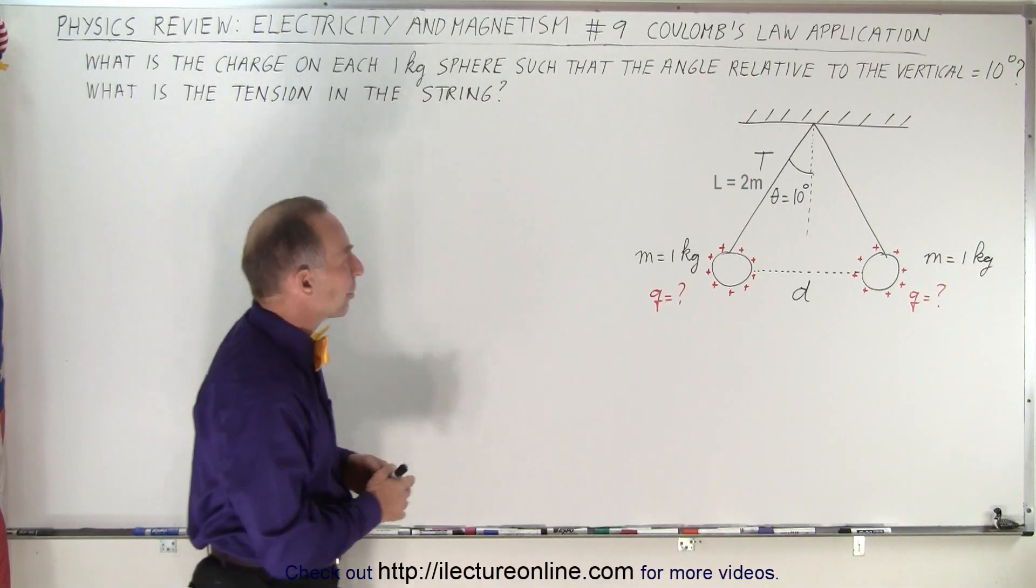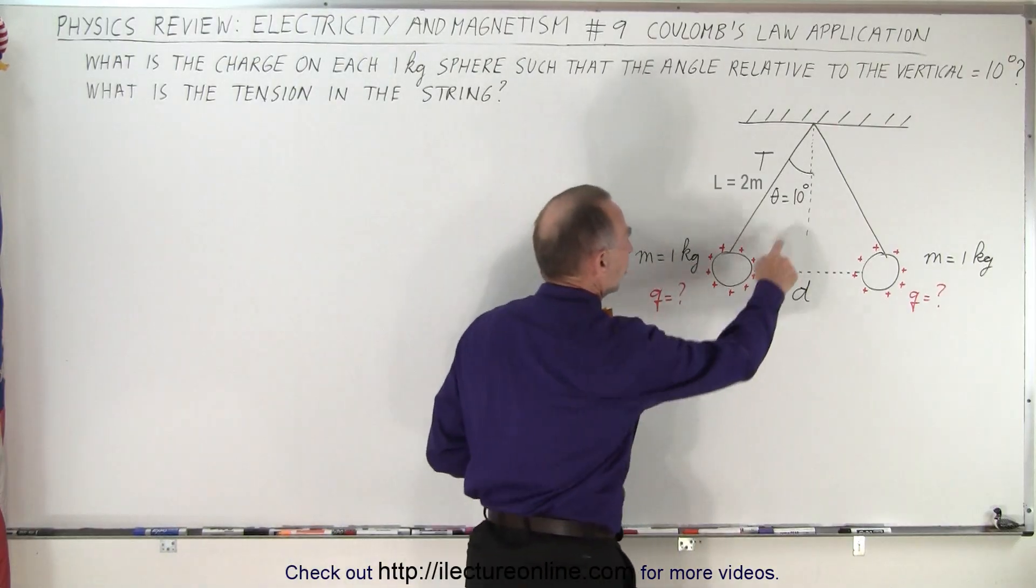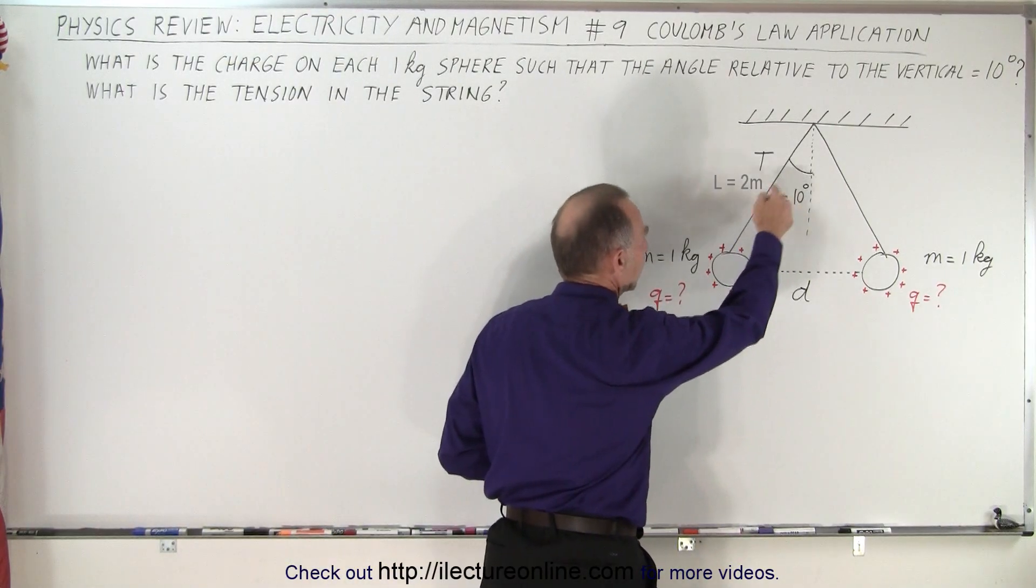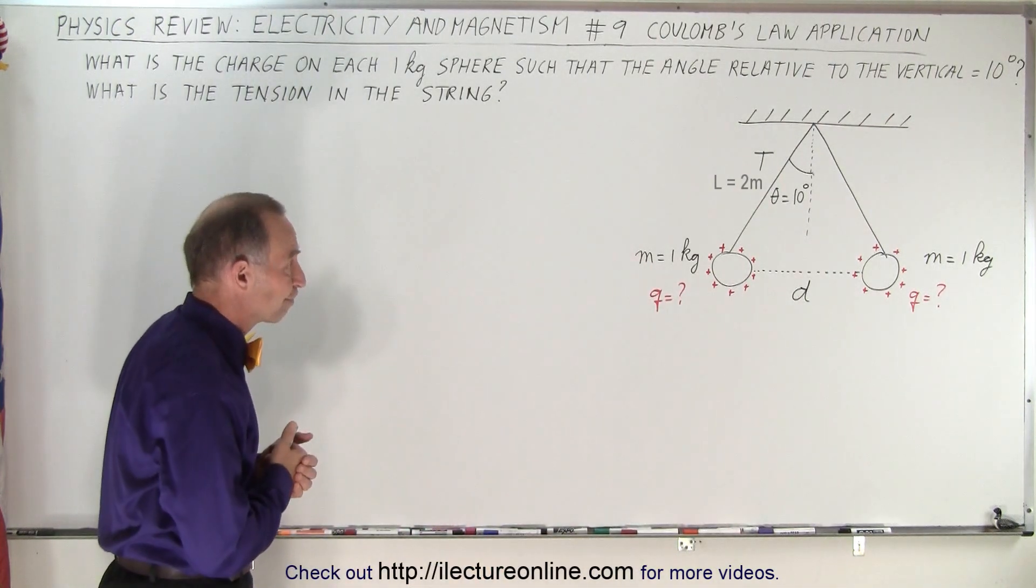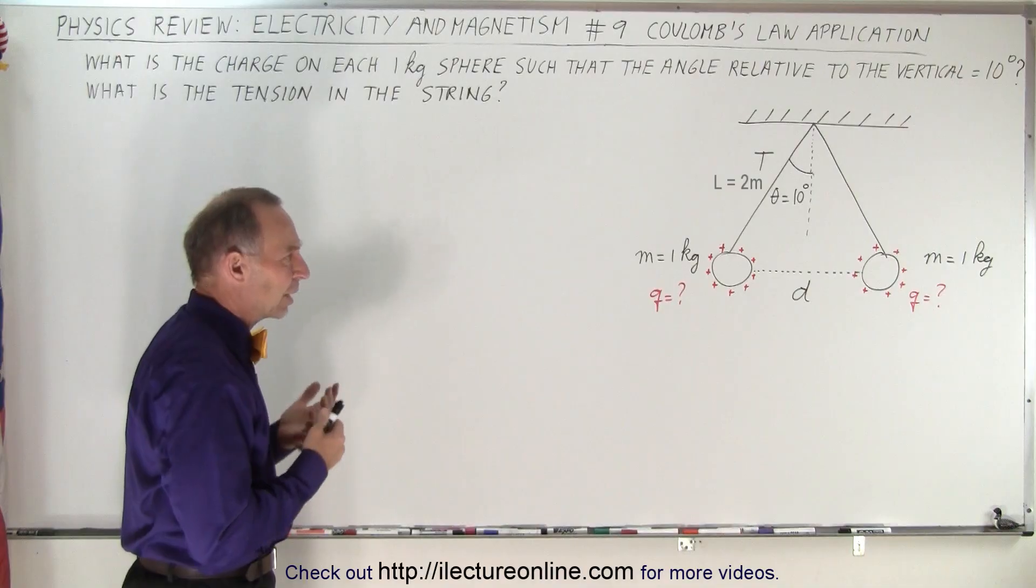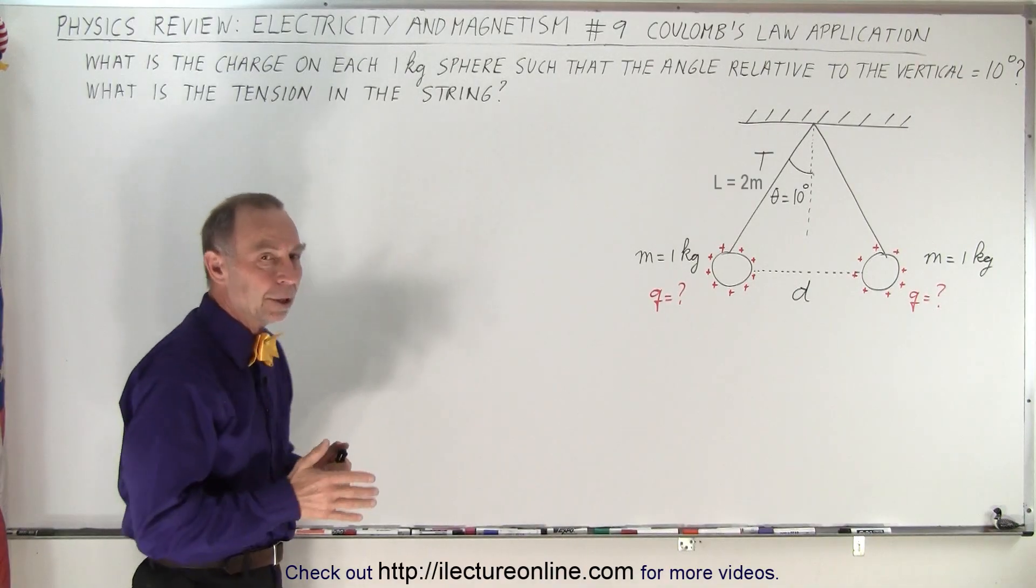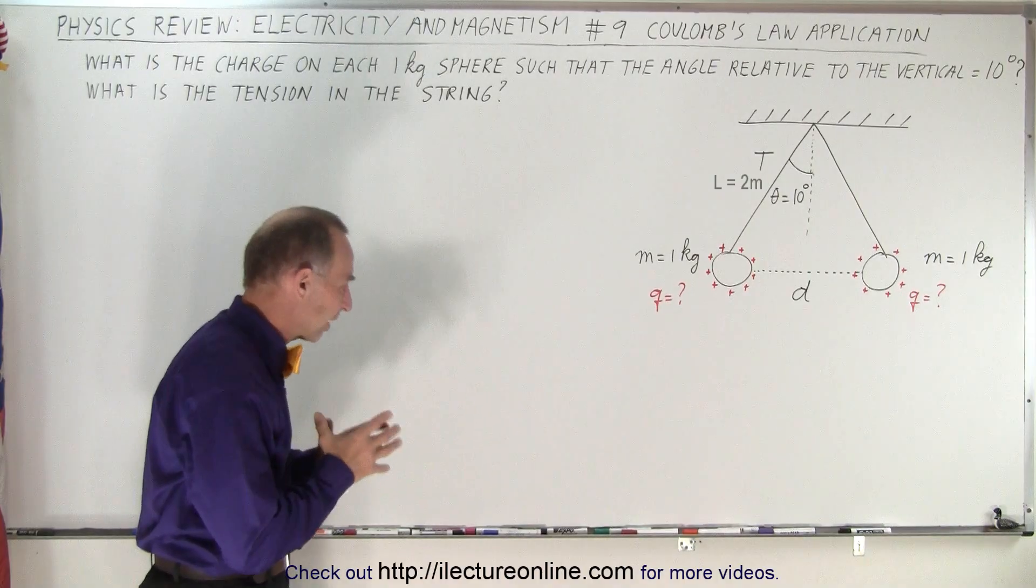The question then may be how much charge will it require such that the angle between the string and the vertical is equal to ten degrees and what is the tension on the string? So how do we do that? How do we work out a problem like this? We start out by drawing vectors.